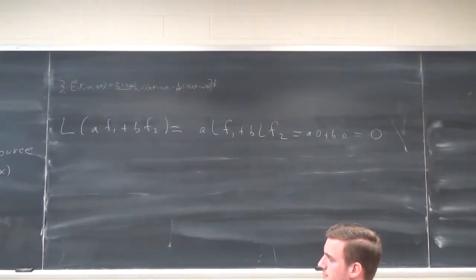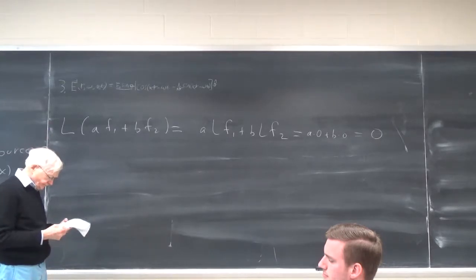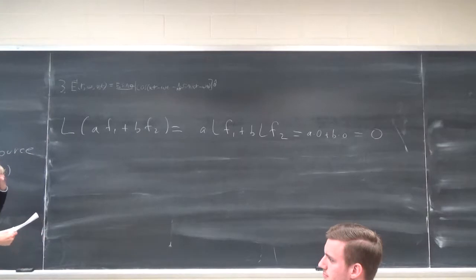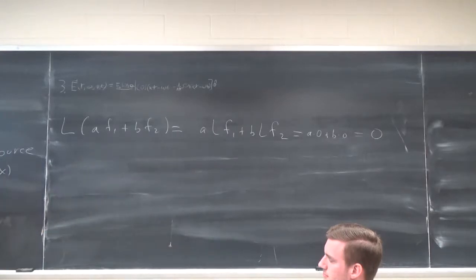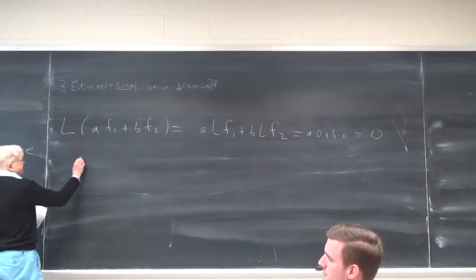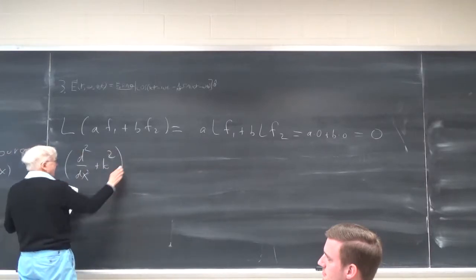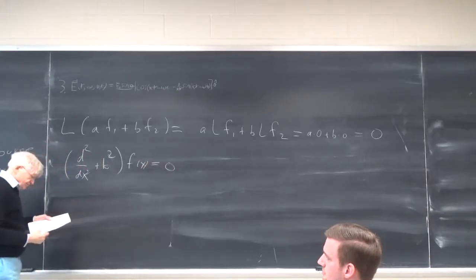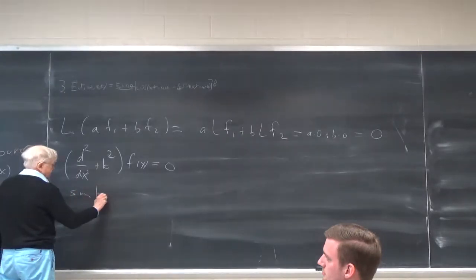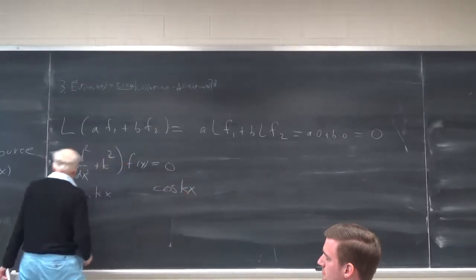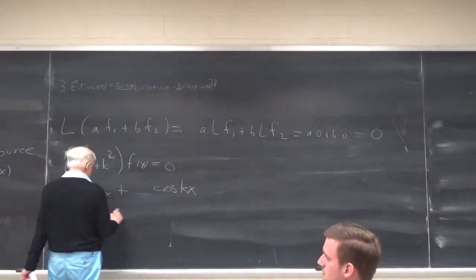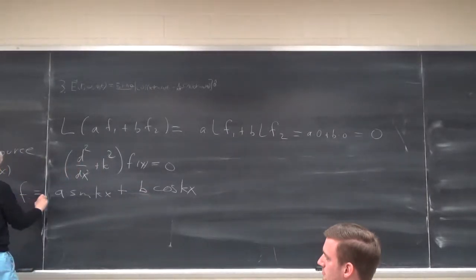The linearity is what gets you the additivity, but in this case you also need the homogeneity. An example is the equation d²/dx² plus k² applied to f(x) equals 0 — here the solutions are sin(kx) and cos(kx), and you can add them. So a·sin(kx) plus b·cos(kx) will be a solution.